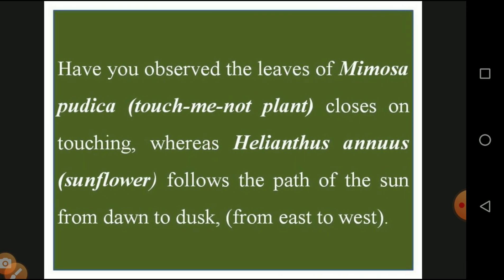You have observed the leaves of Mimosa pudica, the touch-me-not plant, which performs movement when touched or when any object contacts the leaf surface — automatically the leaves close. The sunflower follows the path of the sun from east to west. In the morning it faces east, in the evening it faces west. This kind of movement is automatically done by the plant — a form of tropism.